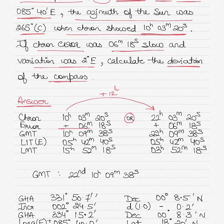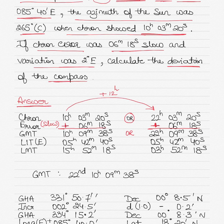We then apply the error. The error is 6 minutes 18 seconds slow, so when the error is slow we add it. We add the same error in both cases to get the GMT time. This gives us two possibilities: 10 hours 09 minutes 38 seconds, or 22 hours 09 minutes 38 seconds.